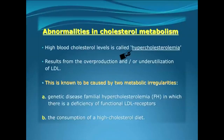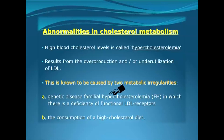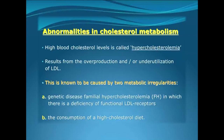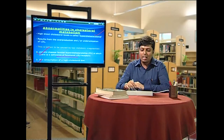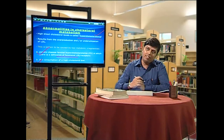The deposition of high levels of cholesterol in blood is called hypercholesterolemia, which takes place by two mechanisms. First, there is a genetic disorder called familial hypercholesterolemia or FH, where there is a deficiency of functional low-density lipoprotein or LDL receptors. Second, if one consumes a high cholesterol-rich diet, hypercholesterolemia may also develop.